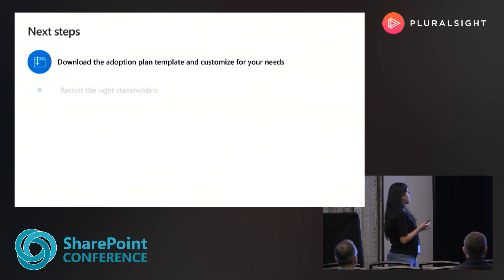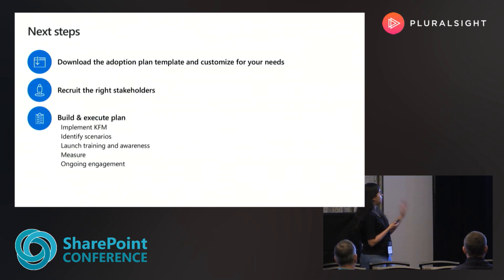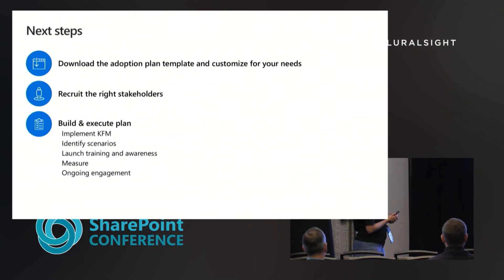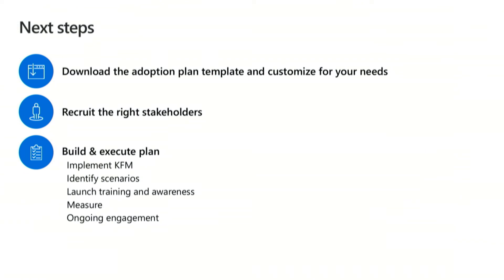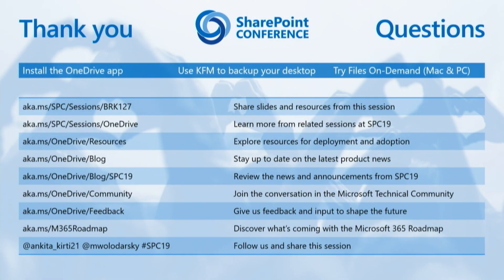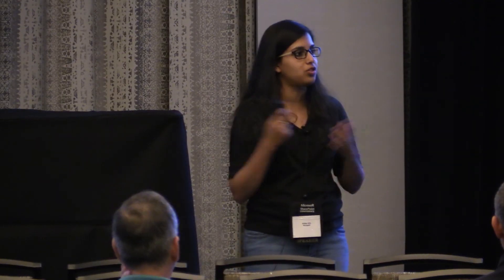The next steps: please go to the website we showed you, download the adoption plan, recruit the right stakeholders, and build and execute the training and communication plan. Also visit the aka.ms links for resources helpful for deployment and adoption, follow our blog for the latest product news, or give us feedback on how to make our products better. This adoption track was added after feedback from last Ignite, so your feedback for this track would be really helpful so we can make it even better the next time. Thank you all for joining and have a great evening.